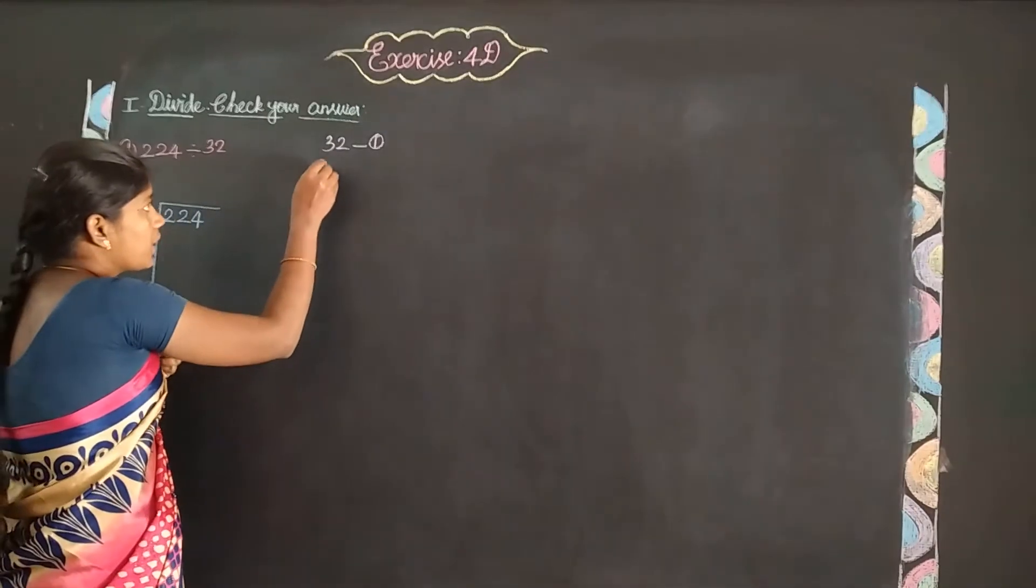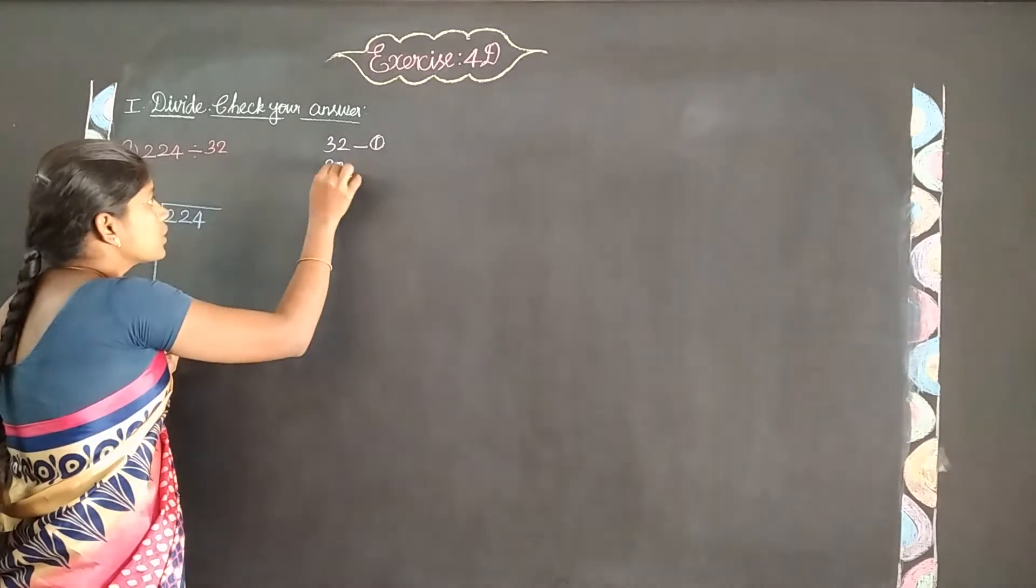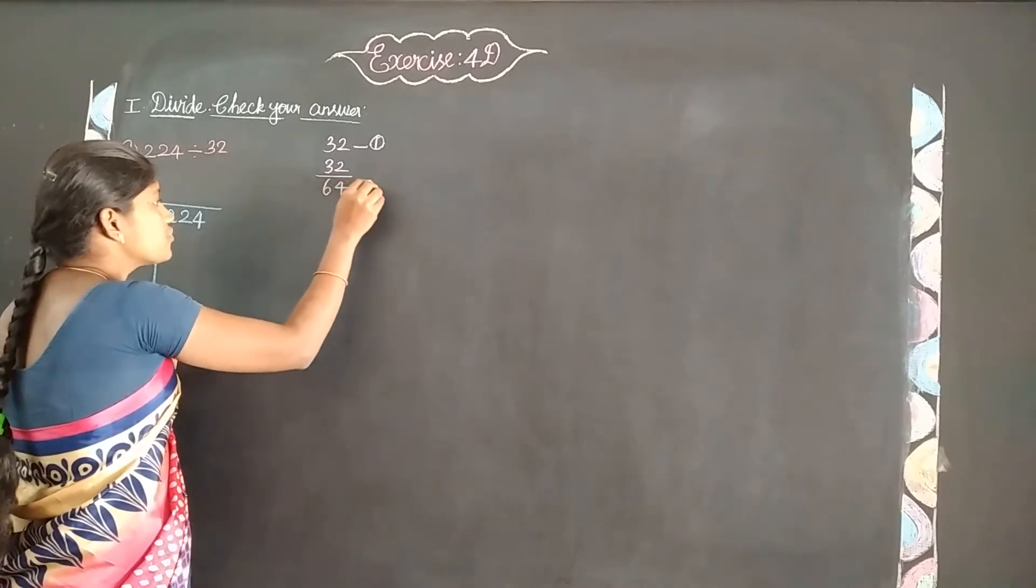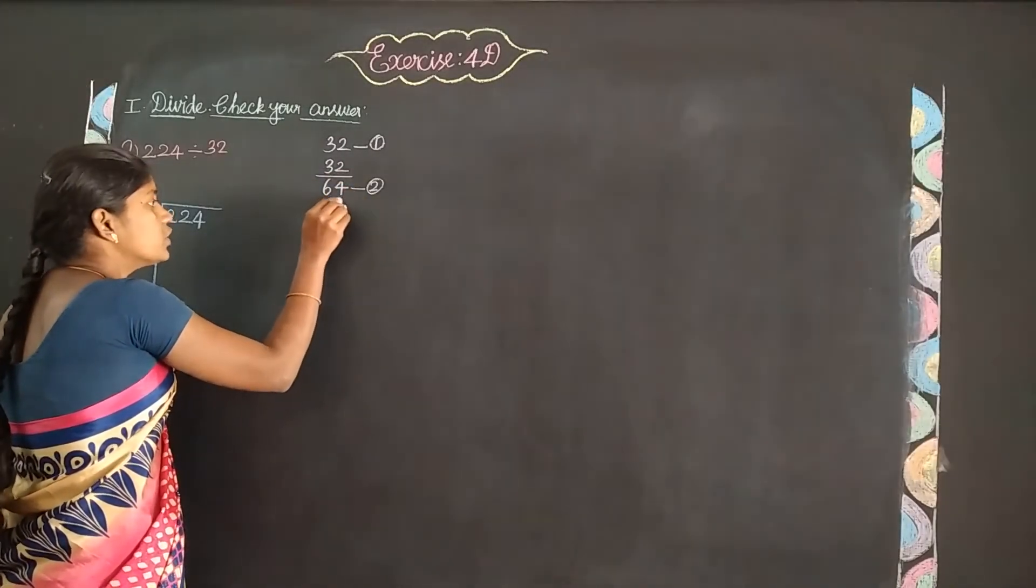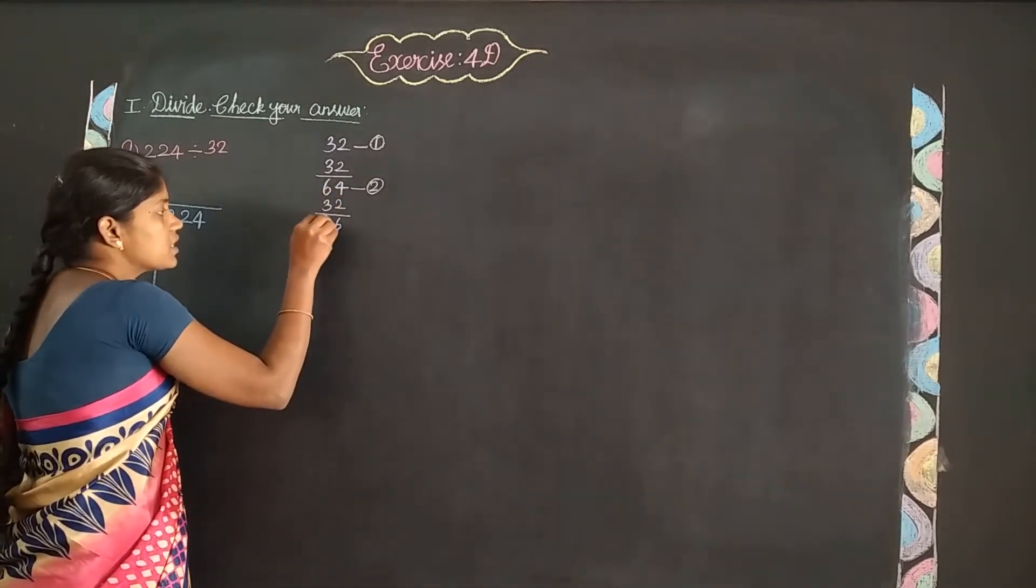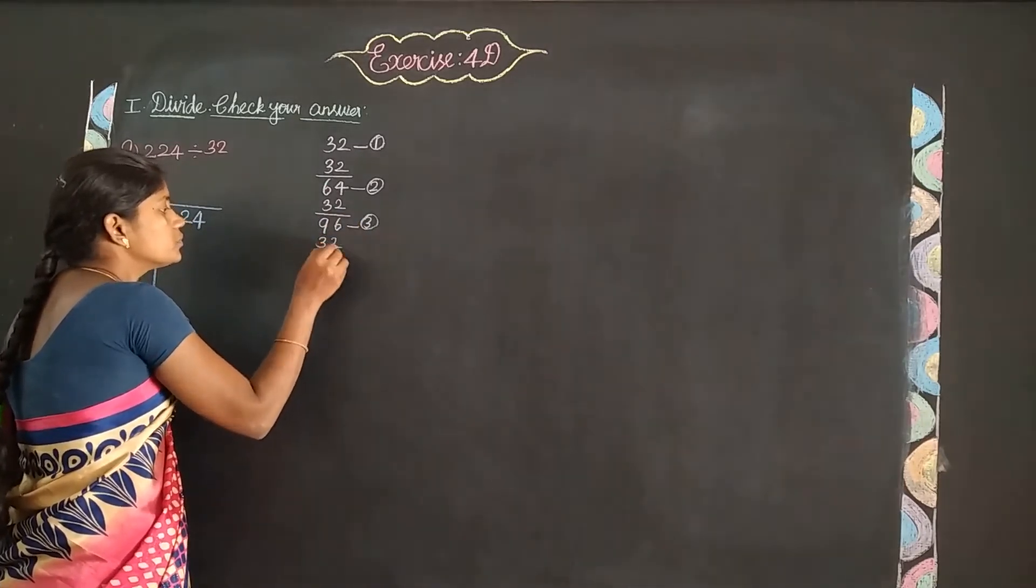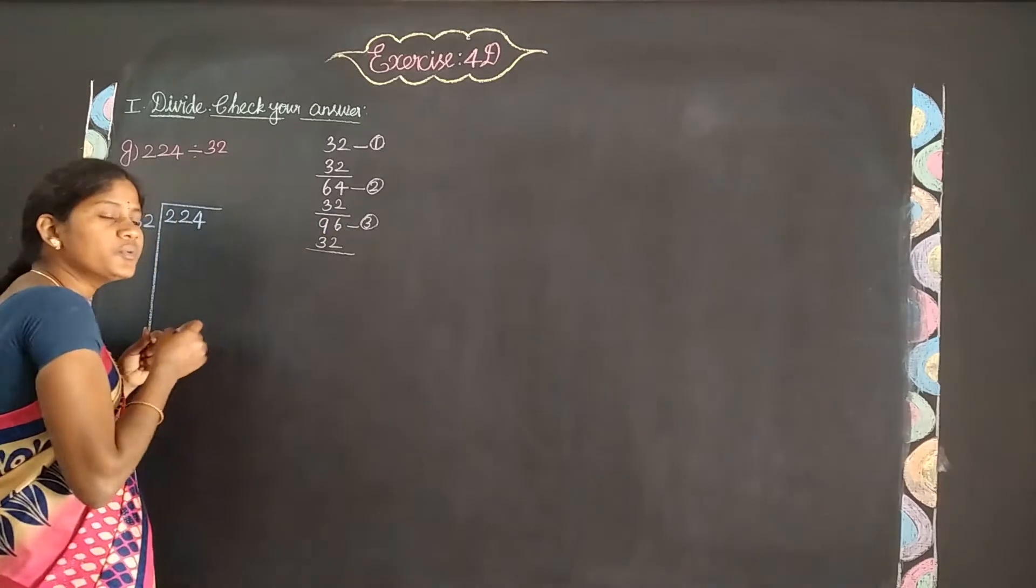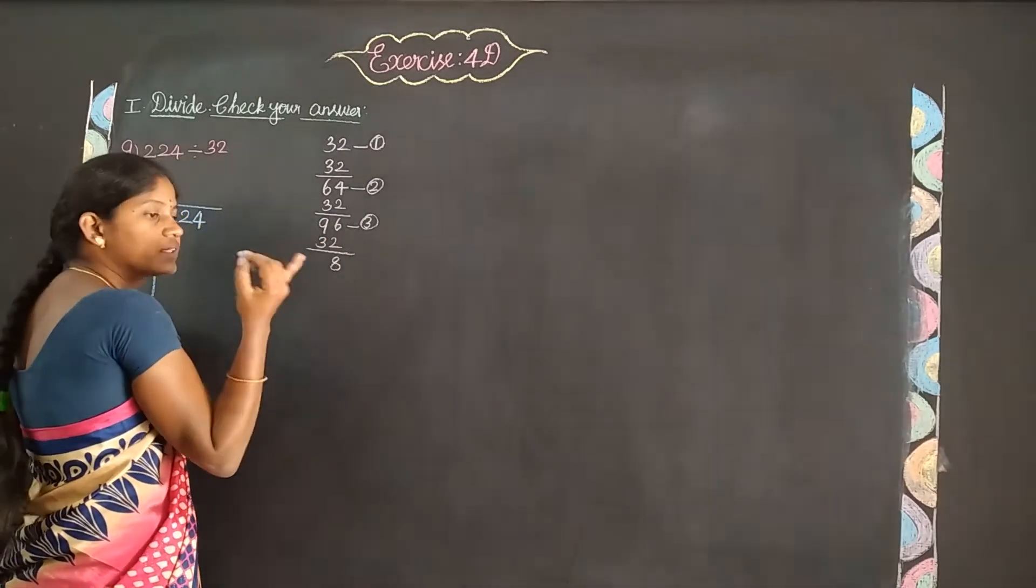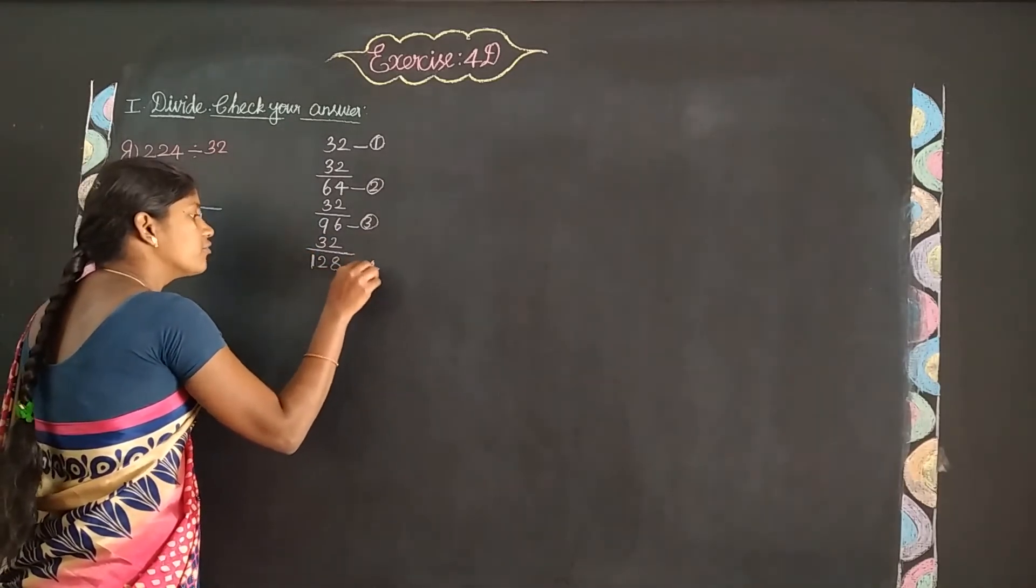1 times 32 is 32. 2 times 32: 32 plus 32 equals 64. 3 times 32: 64 plus 32 equals 96. 4 times 32: 96 plus 32 equals 128.